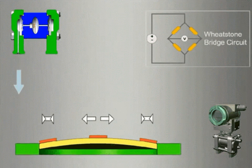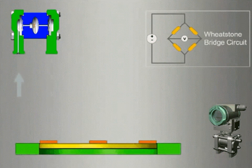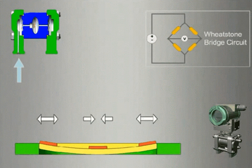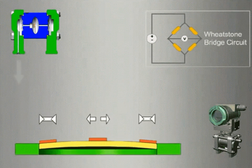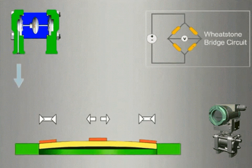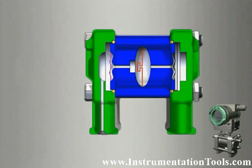The diaphragm expands or compresses based on positive or negative pressure. Resistors are mounted on top of the diaphragm, so when the diaphragm expands or compresses, the resistance value changes.